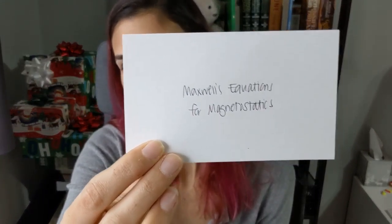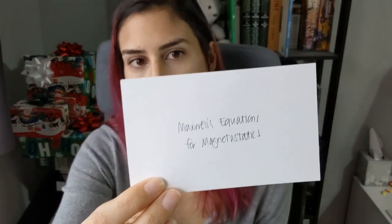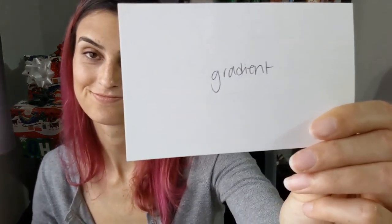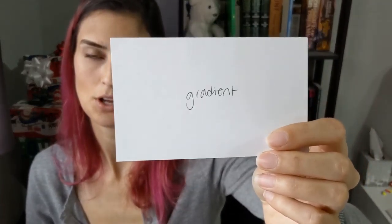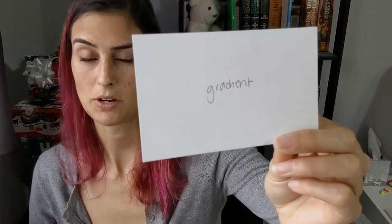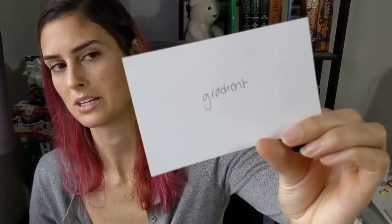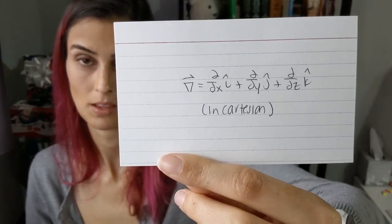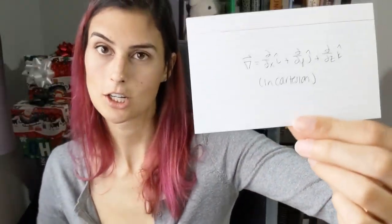Maxwell's equations for magnetostatics: the divergence of B equals zero, and the curl of B equals mu naught times J — no changing electric field, just magnetics. The gradient: the del operator equals the partial derivative with respect to x i-hat, plus partial with respect to y j-hat, plus partial with respect to z k-hat in Cartesian coordinates — remembering this helps you remember what divergence and curl are.